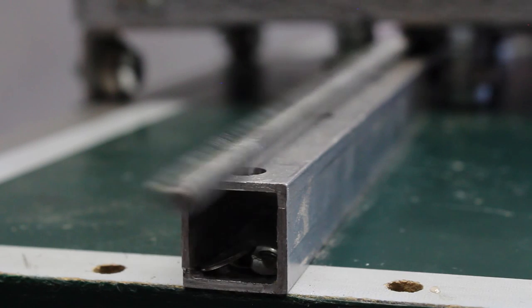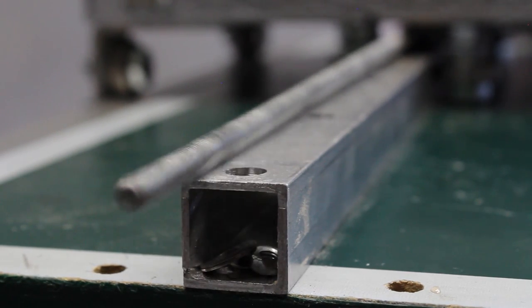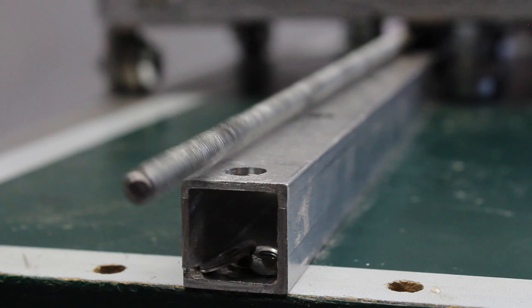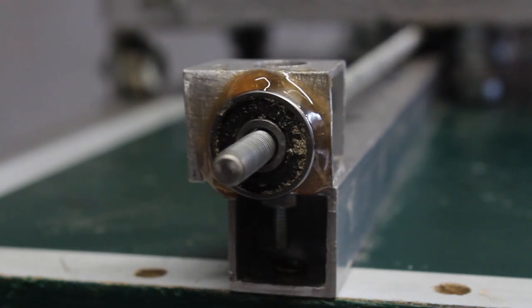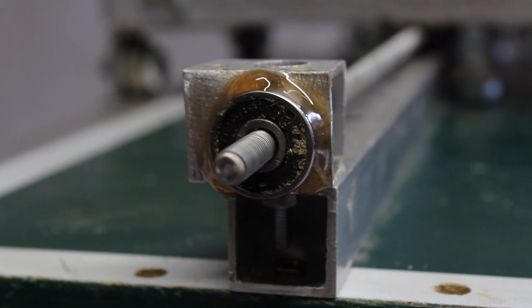The second end of the threaded rod is the free end. With no guidance, this end starts vibrating whenever the rod turns with high speeds. A simple ball bearing prevents that end from vibrating while axial movement is not limited.